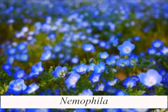Both micropylar and chalazal haustoria are formed in the plant Nemophila, belonging to the family Boraginaceae. The first division of the endosperm mother cell forms the micropylar and the chalazal cell. The chalazal cell directly functions as a chalazal haustorium. The micropylar cell divides transversely to form a central cell and a terminal cell. The terminal cell develops into a micropylar haustorium and the central cell forms the main tissue of the endosperm.